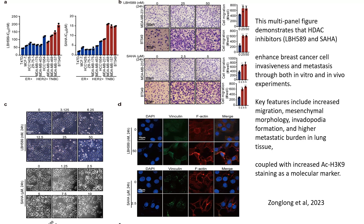In panel A, researchers present IC50 values of HDAC inhibitors LBH589 and Saha across breast cancer cell lines by receptor subtypes ER+, HER2+, and TNBC. Notice that the TNBC cells, represented in red, show higher IC50 values compared to ER+ and HER2+ cells, indicating that TNBC cells are more resistant to these inhibitors.